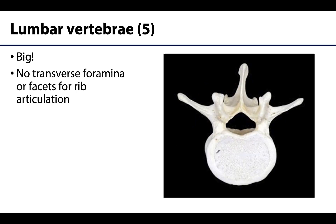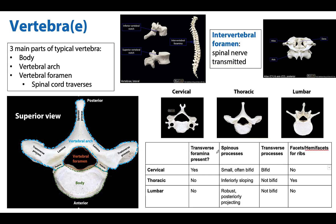Last but not least are the lumbar vertebrae, of which there are five. The best way to tell you are looking at lumbar vertebrae is that these are big, big, big — that is the most distinctive thing. You can also use the process of elimination: there are no transverse foramina and no facets for rib articulation. It's really that size that gives it away, although some of the inferiormost thoracic vertebrae can be on the larger side. That brings us to the end and our favorite: the summary slide — please take your time to review and always reach out with any questions.